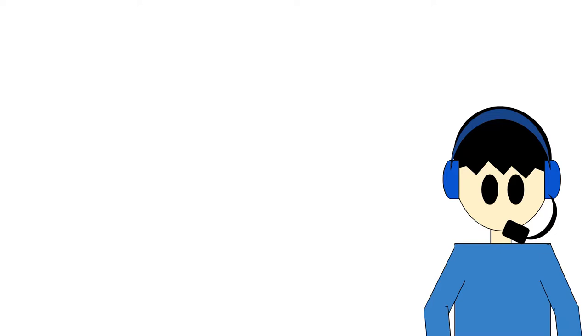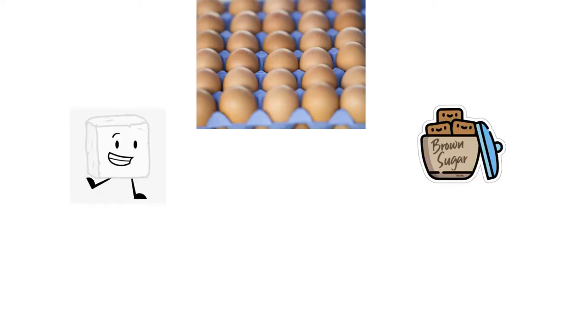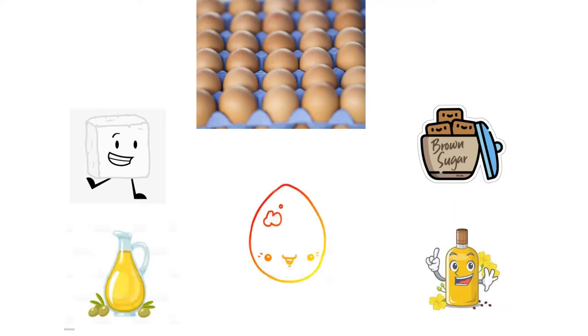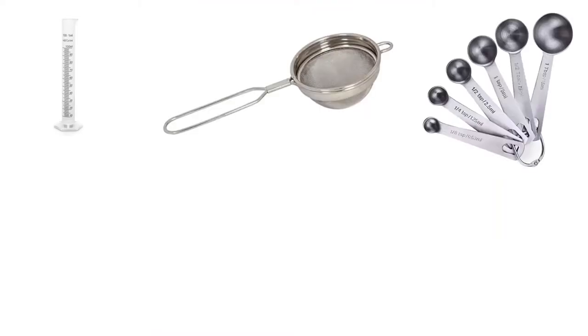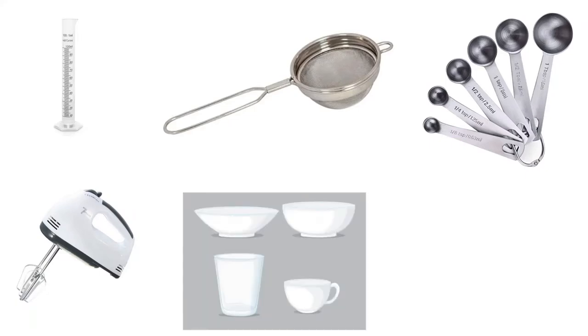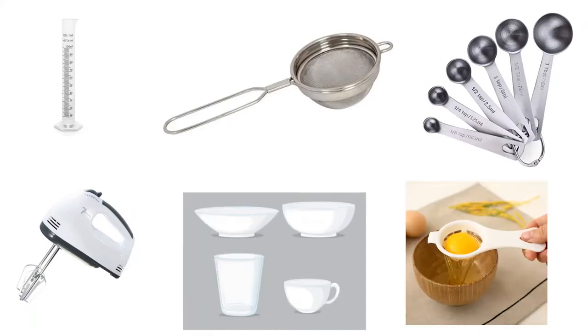In this experiment, I will be testing the stability of egg foam by using different ingredients, temperature, and process. If egg foam is unstable, then more fluid is extracted. If the egg foam is stable, then less fluid is extracted. The materials I will use are cold egg, white sugar, brown sugar, canola oil, olive oil, and one warm egg. I will also use a graduated cylinder, metal filter, tablespoon and teaspoon, a machine mixer, some cups and bowls, and an egg yolk separator.